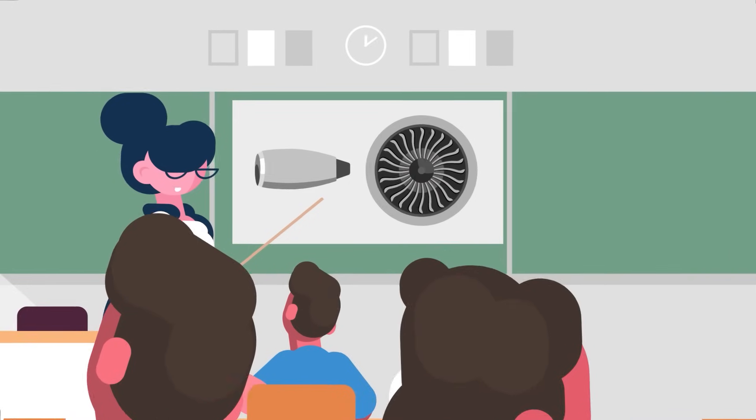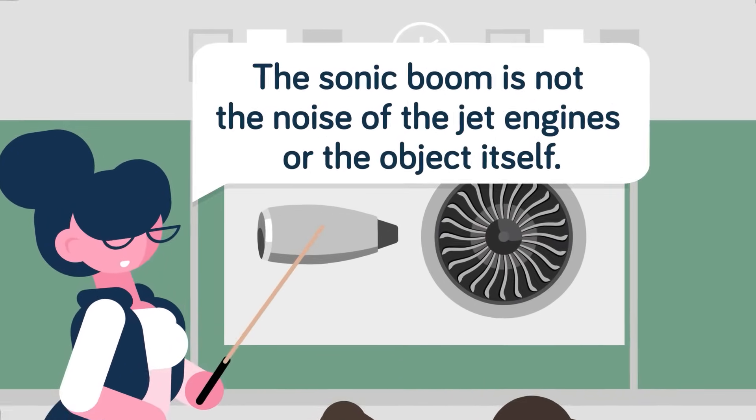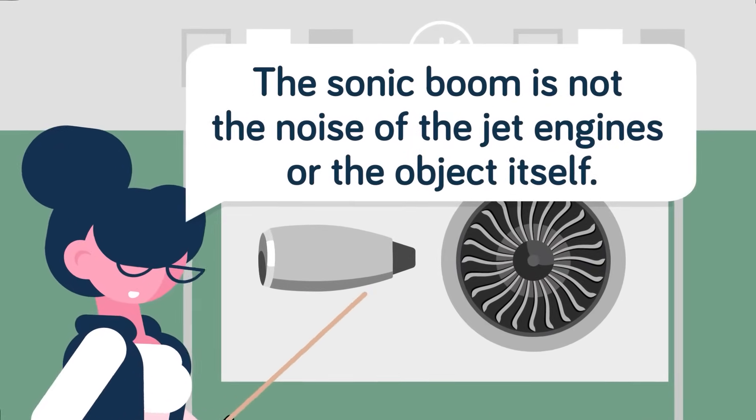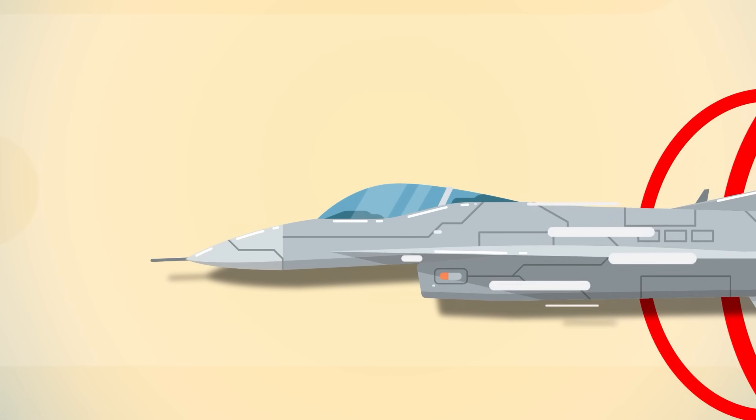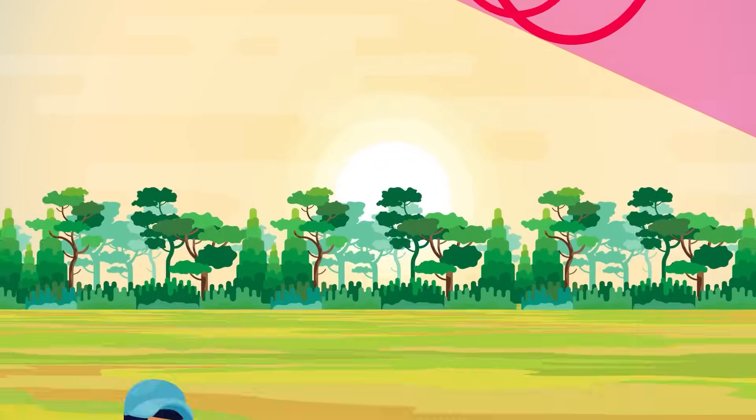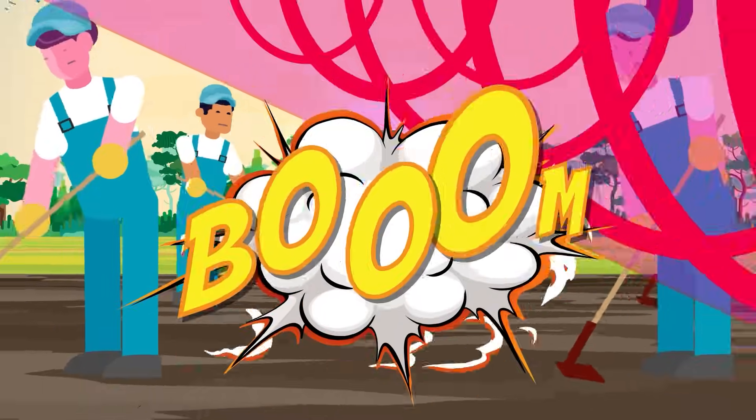The sonic boom is not the noise of the jet engines or the object itself. It is actually the sharp release of pressure that occurs between the built-up shockwave in front of the aircraft that collapses into the space the aircraft previously occupied as it moves through the air.